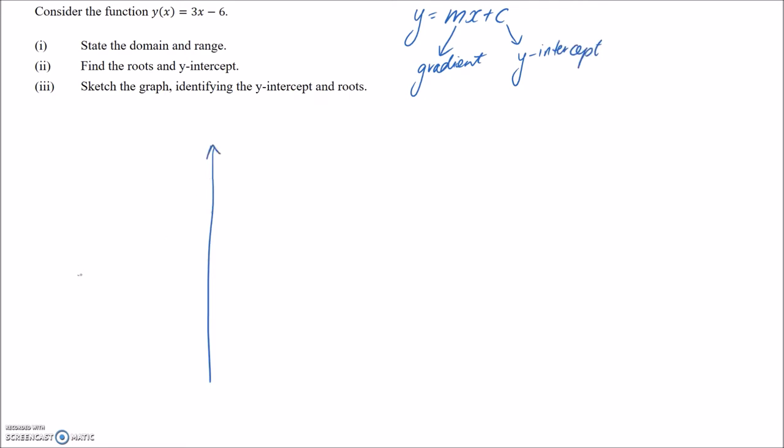So if we give ourselves a sketch, this is x and this is y. In our case the gradient here m is equal to positive 3. So since it's a positive number, it's going to have an upward trend on the graph and our y-intercept here is negative 6.